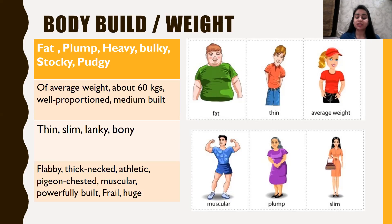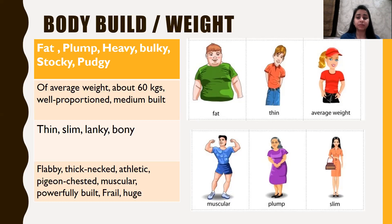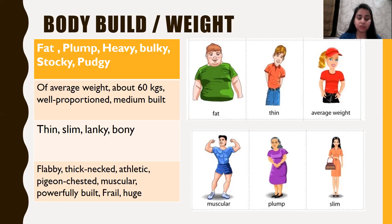There are a few more words to describe body build: 'flabby' — a person whose skin is very soft and hanging loosely (e.g., flabby around the waist); 'thick neck'; 'athletic' — all sports persons have an athletic body; 'pigeon chested' — a person whose chest is slightly outward; 'muscular' — one who has lots of muscles; 'powerfully built' — a strong person; 'frail' — a weak person; and 'huge' — an enormous person who is very tall and very broad.